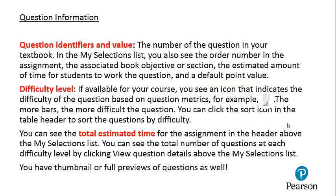Question information, identifiers, and value: If you see, for example, 132, it's the number of the question in your textbook — Chapter 1, Section 3, Problem 2. In the My Selections list, you will also see the order number in the assignment, the associated book objective or section, the estimated amount of time for students to complete the question, and the default point value. If available for your course, you will see an icon that indicates the difficulty of the question based on question metrics. The more bars, the more difficult the question. You can click the sort icon on the table header to sort questions by difficulty.